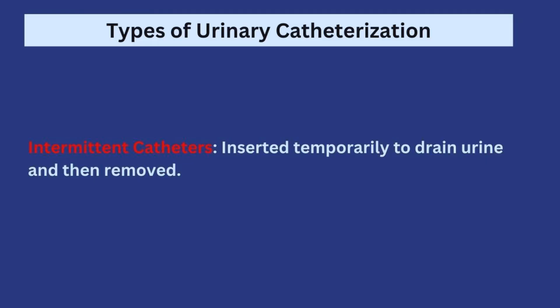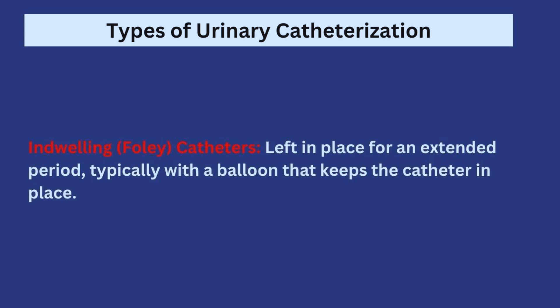Now let's move on to the various forms of urinary catheterization. The first type is intermittent catheters — from the word intermittent, meaning on and off. This is where you insert the catheter temporarily to drain urine and then remove it. Next are indwelling catheters, which are left in place for an extended period of time with a balloon inflated to keep the catheter in place. This is what we more commonly see on the wards.